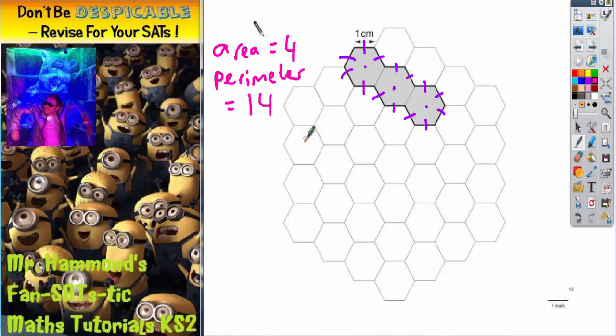First thing we might like to try is 4 hexagons in a straight line like they are here. Let's see what happens. The area is going to be 4. For the perimeter: 1, 2, 3, 4, 5, 6, 7, 8, 9, 10, 11, 12, 13, 14, 15, 16, 17, 18. That has a perimeter of 18, so that's way too long. It needs to be 14.